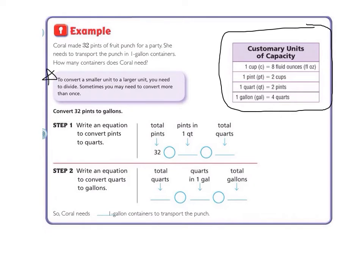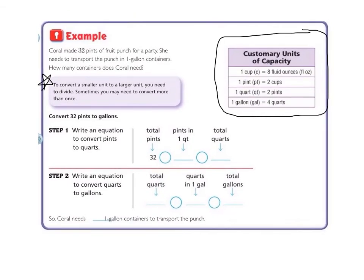Let's look at this little purple box here. It says, to convert a smaller unit to a larger unit, you need to divide. Sometimes you may need to convert more than once, which is what we will be doing in this example. First we will be converting from pints to quarts, and then from quarts to gallons, which is what we will be needing to put that fruit punch in when we transport it to the party.